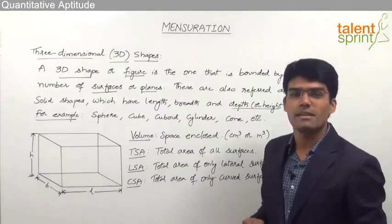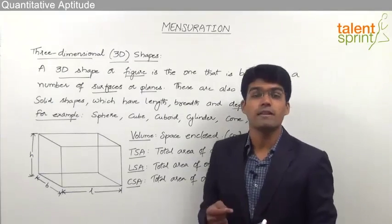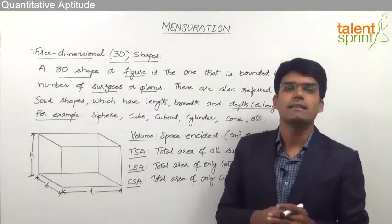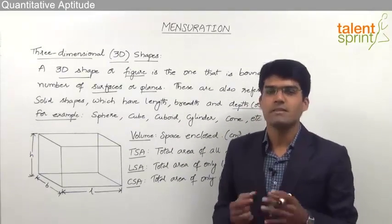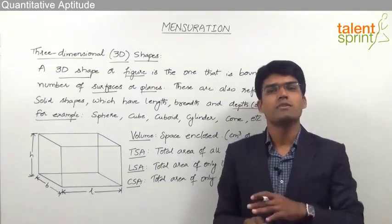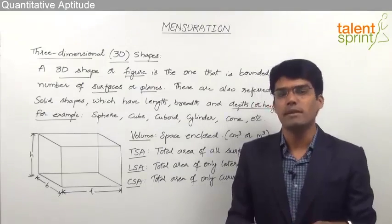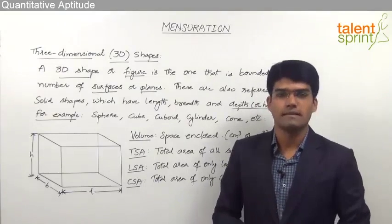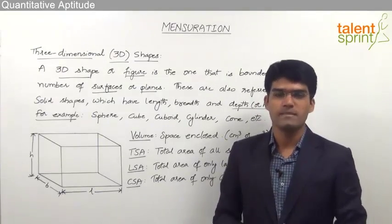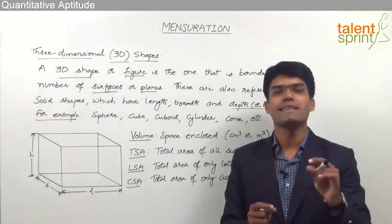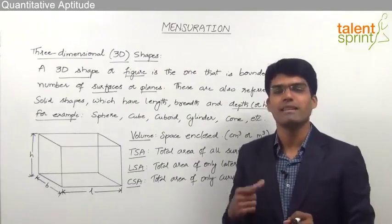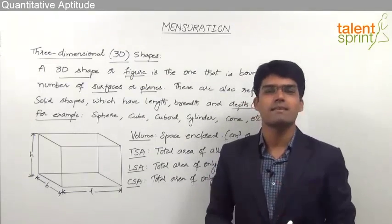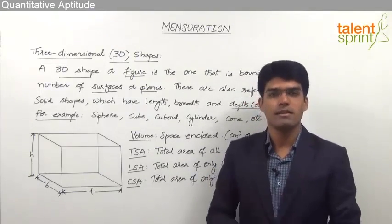These are the three dimensions that we have for a 3D shape: length, breadth and depth. Whereas in case of a 2D shape, there is only length and breadth but no depth or height. That means, in a 2D shape, the thickness is zero. But in case of a 3D shape, there exists some thickness for the given shape.